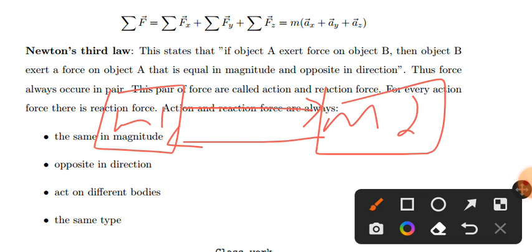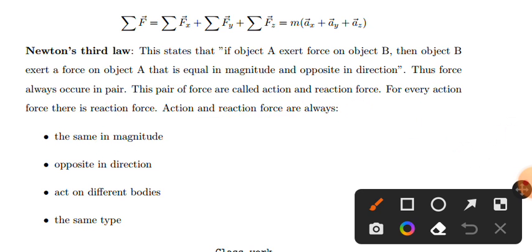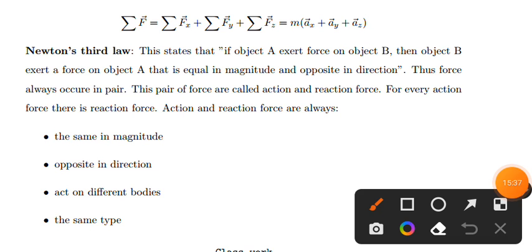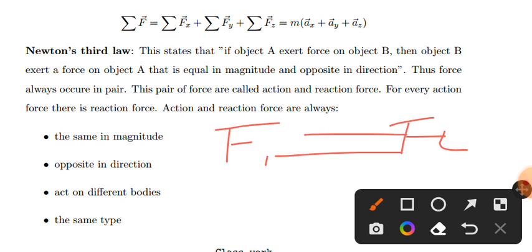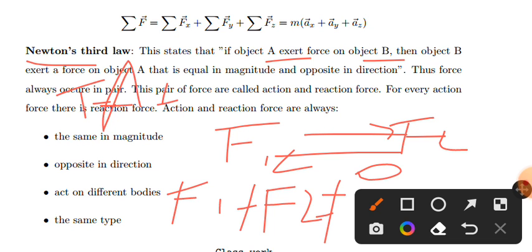For every action there is an equal and opposite reaction. If object A exerts a force on object B, then B exerts an equal and opposite force on A. Therefore, force on A plus force on B equals zero — they are equal in magnitude but opposite in direction.